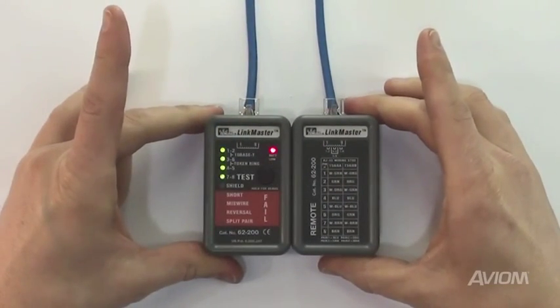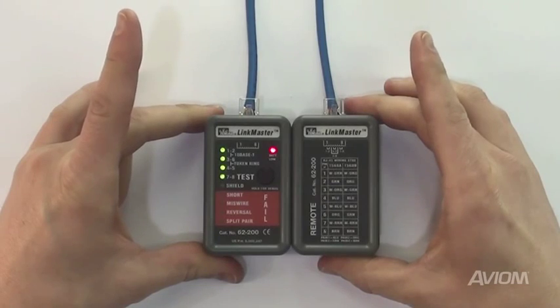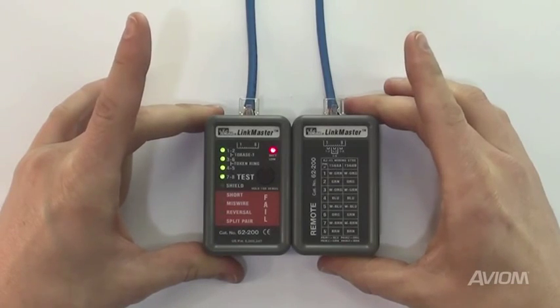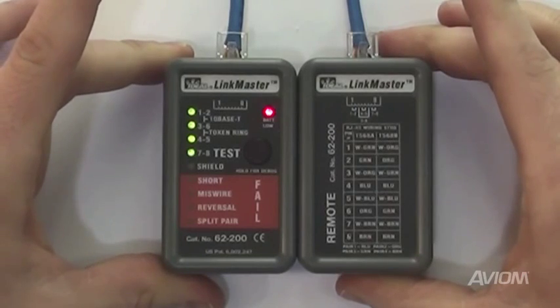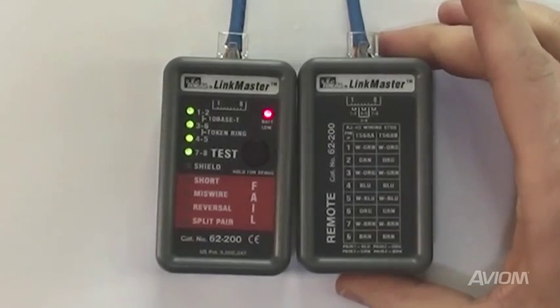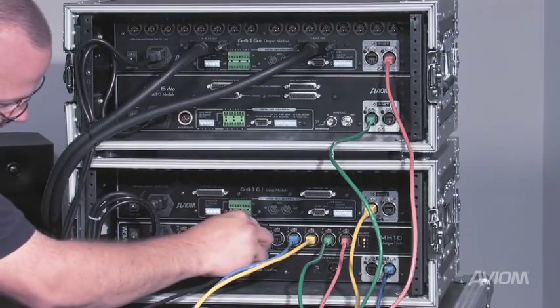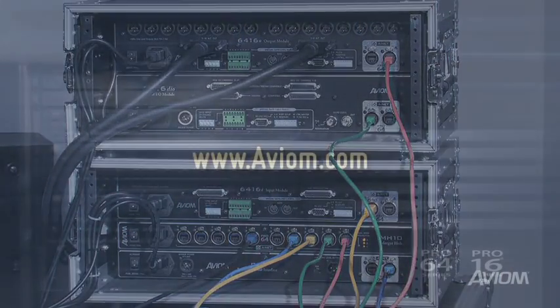When the cable is terminated correctly, the tester will confirm that everything is okay. Keep in mind that these simple testers are not testing to make sure that the wire will properly carry data, but only confirm that the connectors are properly wired and crimped. After testing, the cables are ready for use.